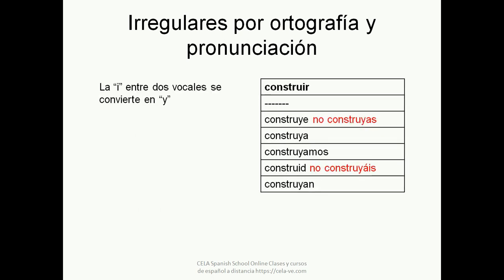Finally, let's explain what happens with verbs like CONSTRUIR (to build): tú CONSTRUYE, tú no CONSTRUYAS, usted CONSTRUYA, nosotros CONSTRUYAMOS, vosotros CONSTRUID, vosotros no CONSTRUYÁIS, ustedes CONSTRUYAN. The rule is: when the letter I appears between two vowels, it becomes Y (Y griega). Other verbs in this group are HUIR (to run away) and DESTRUIR (to destroy).